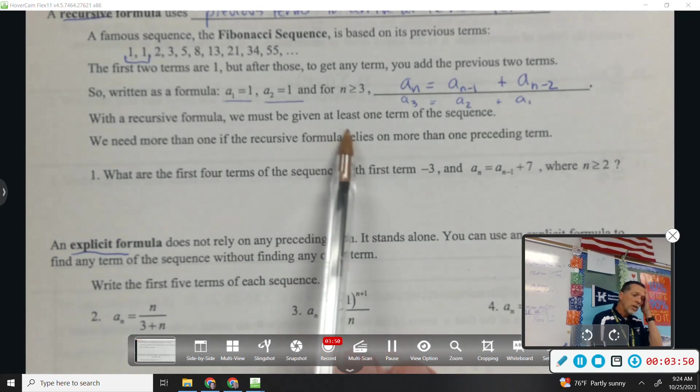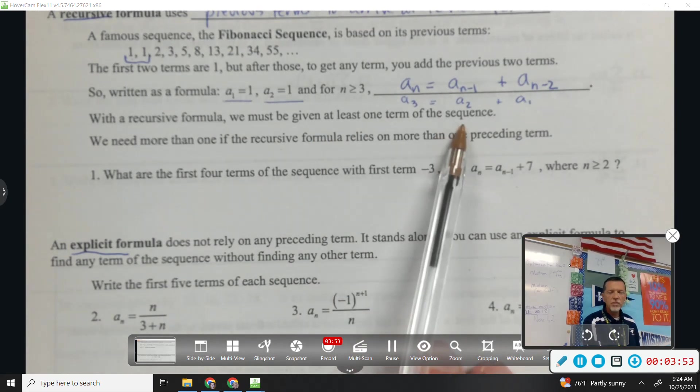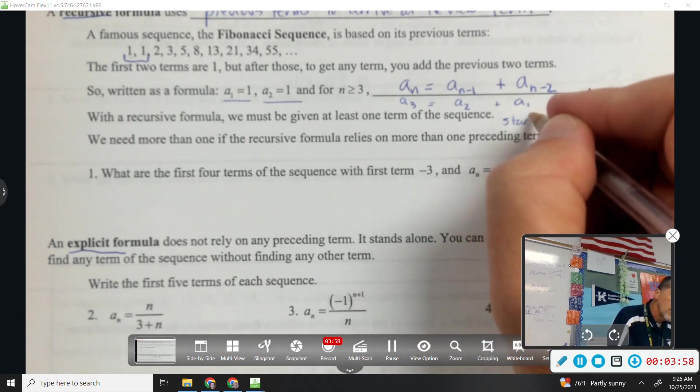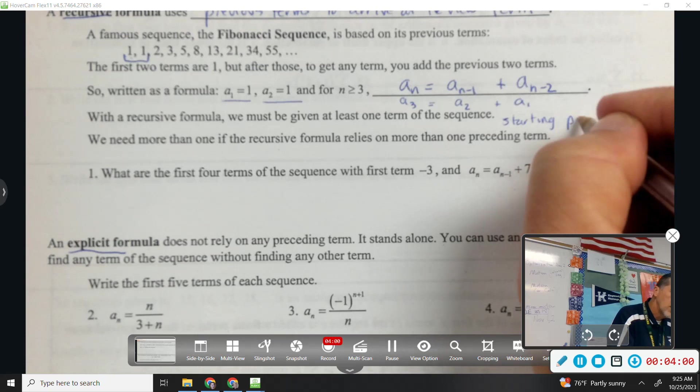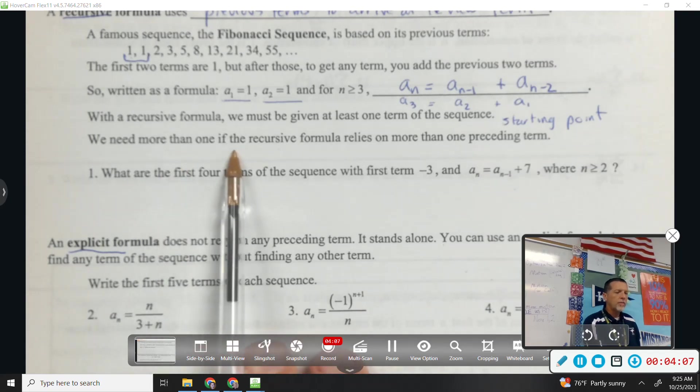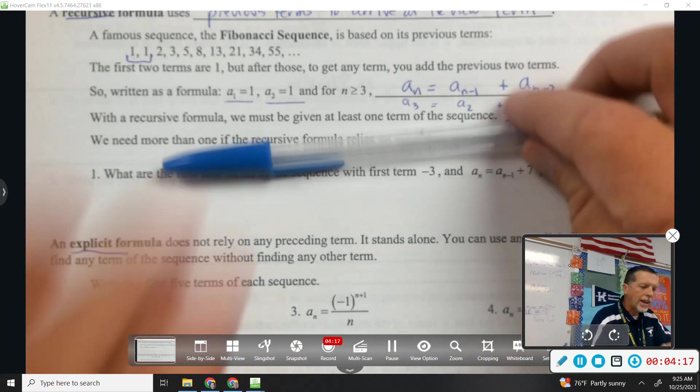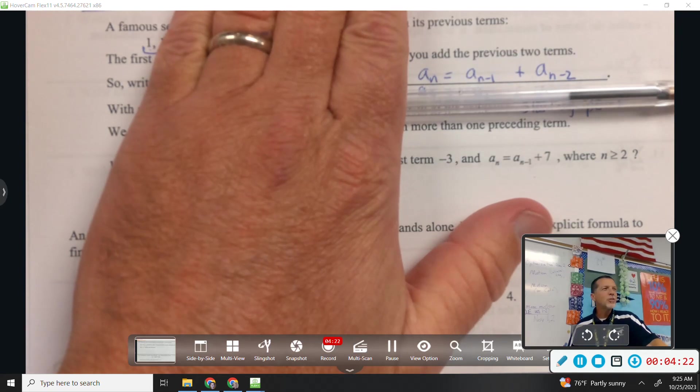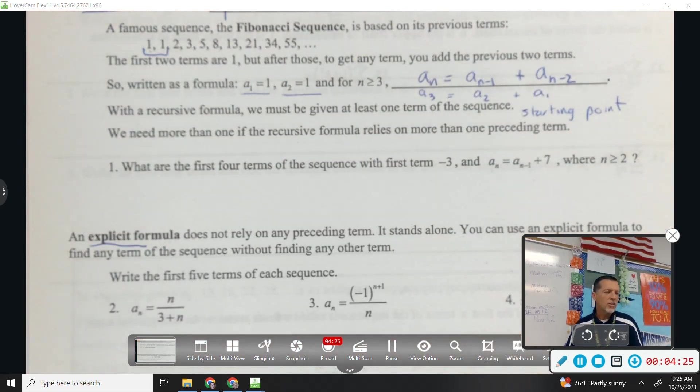With the recursive formula, you must be given at least one term of the sequence. Like you need a starting point. Or a starting term. And if the formula relies on more than one preceding term, then you need however many preceding terms it is to get going. I can't just say the nth term is the sum of the two previous terms if you don't know what the two previous terms are. So we have to give you a starting point.